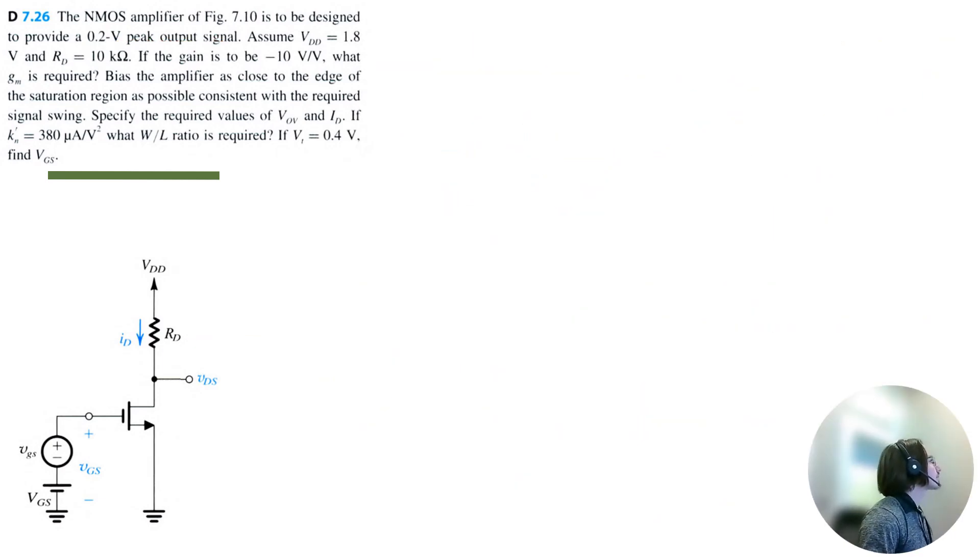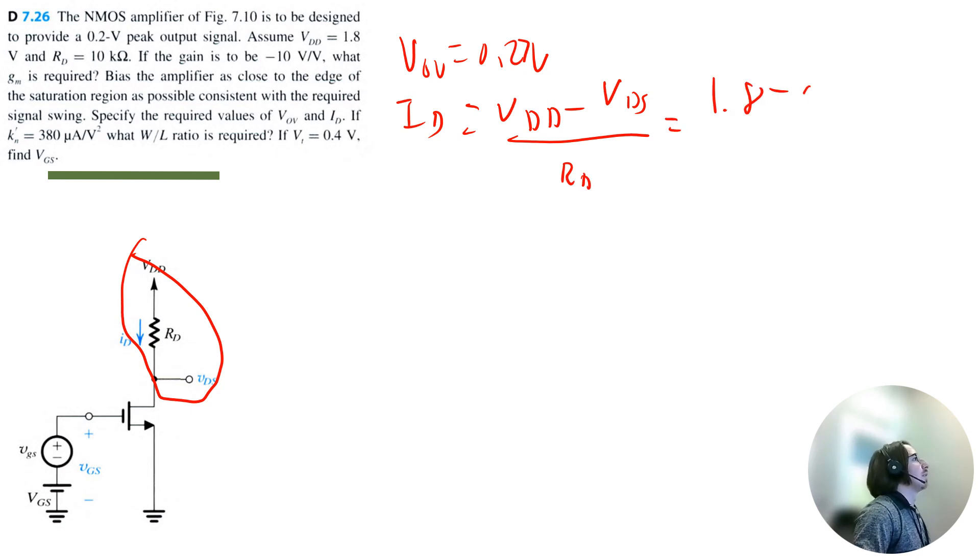So let's finish up this question. To specify the values of V overdrive and ID, I already solved for V overdrive to 0.27 volts. Now we can solve for ID if we look at this wire. It's going to be VDD minus VDS, 0.3 volts divided by 10 kilo ohms. So I calculate ID to be 0.133 milliamps.